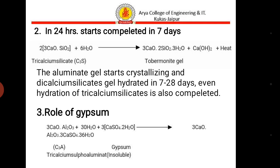Aluminate gel starts crystallizing and dicalcium silicates gel is hydrated over 7–28 days. Regarding the role of gypsum: gypsum is added during the grinding of cement and is used as a retarder for setting. Otherwise, cement when mixed with water would set too quickly. So gypsum enhances the initial time period of setting.